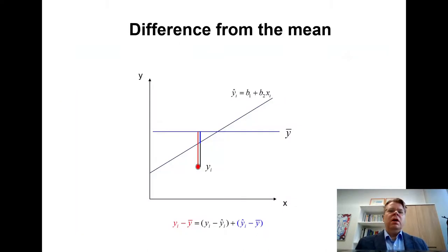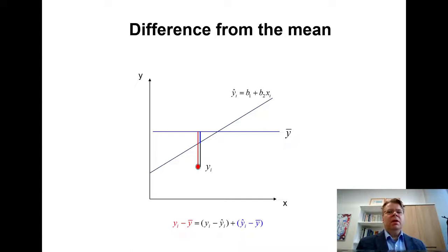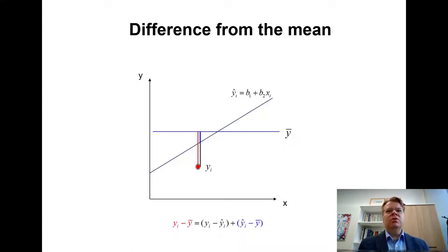Let's consider a simple graphical example. I will consider a single regression case with a single X variable so that we can gain some intuition. On this diagram, I focus on a single observation I, indicated here as a red dot labeled YI. I have also drawn this upward sloping regression line, governed by coefficients B1 and B2.